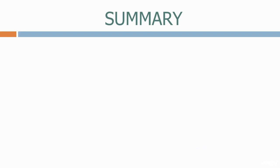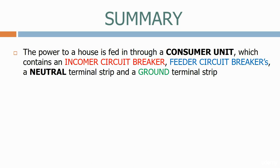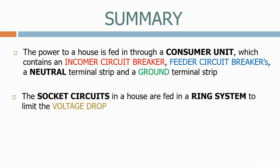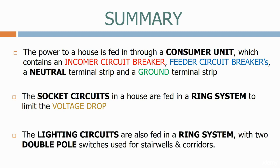Let's now summarise what we've learned today. The power to a house is fed in through a consumer unit, which contains an incomer circuit breaker, feeder circuit breakers, a neutral terminal strip and a ground terminal strip. The socket circuits in the house are fed in a ring system to limit the voltage drop. The lighting circuits are also fed in a ring system, with two double-pole switches used for stairwells and corridors. You've now completed five modules and should be starting to understand all of the basic principles used to design and operate the electrical power network. In the next few sections we'll start looking at the main equipment needed to make the power system a reality.